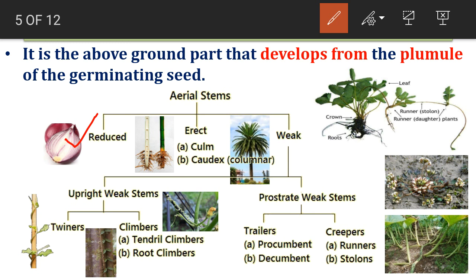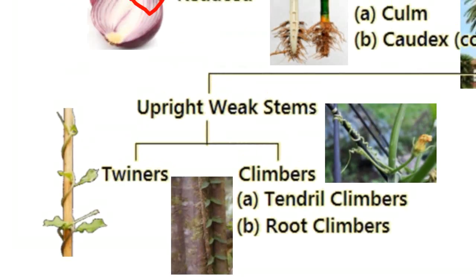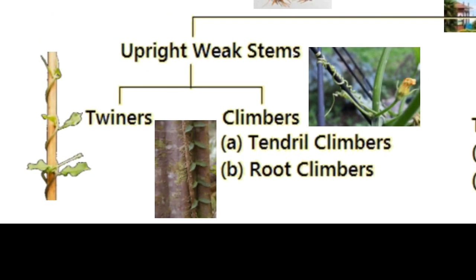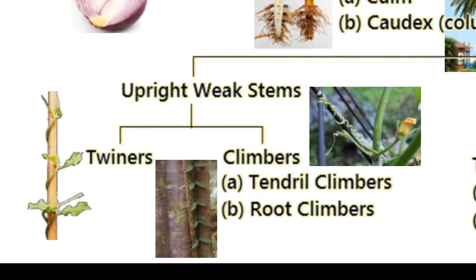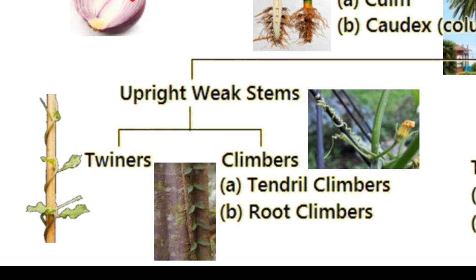Next is the twining type, where the stem is weak and encircles or twines around available support for anchorage. Next is the tendril type — again the stem is weak, and it produces specialized appendages called tendrils for attachment to available support. Next is root climber, where the stem produces roots at nodal positions for anchorage to the support. These are examples of root climbers, with different types of roots arising at the nodal portion of the stem.